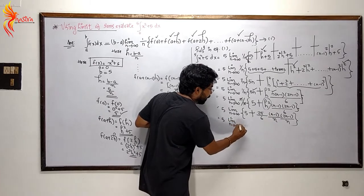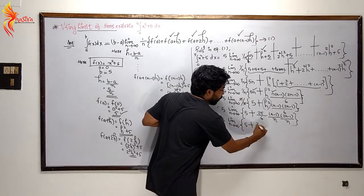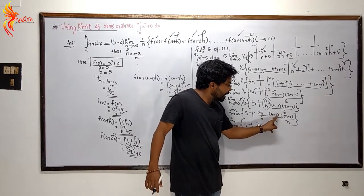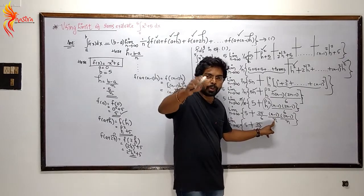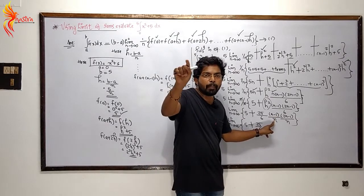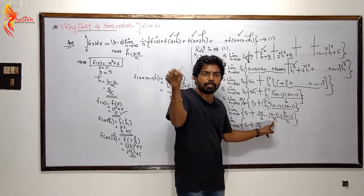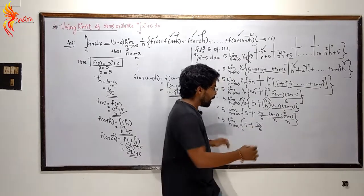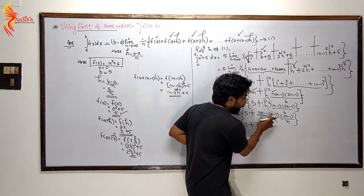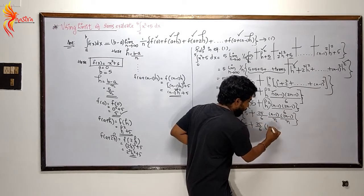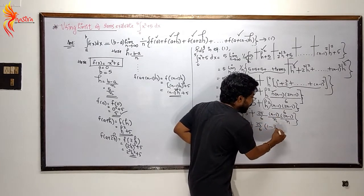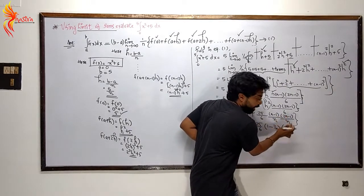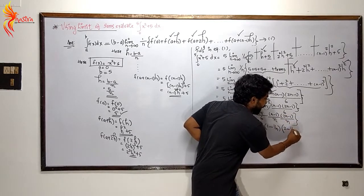Taking the limit as n tends to infinity, 5 into limit n tending to infinity. We split the fractions: n by n minus 1 by n gives 1 minus 1/n, and 2n by n minus 1 by n gives 2 minus 1/n. As n tends to infinity, 1/n tends to 0.